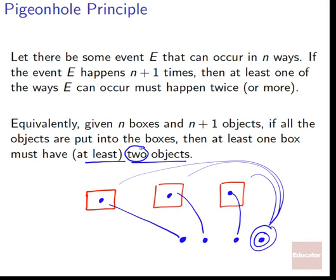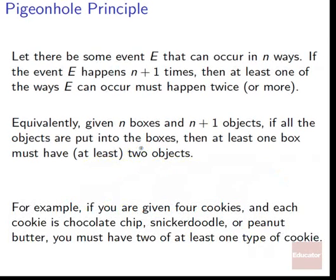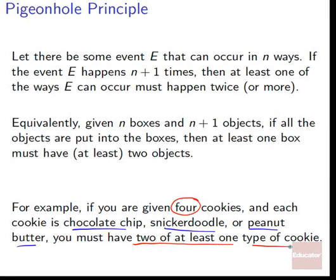In many ways it's just common sense — it seems a little surprising to see in a mathematical context because it makes such perfect sense intuitively — but we can say some pretty surprising things using this idea. For a quick example: if we were given four cookies and each cookie was one of three types — chocolate chip, snickerdoodle, or peanut butter — then since we have four cookies and only three possibilities, we have to have at least two of one type of cookie.